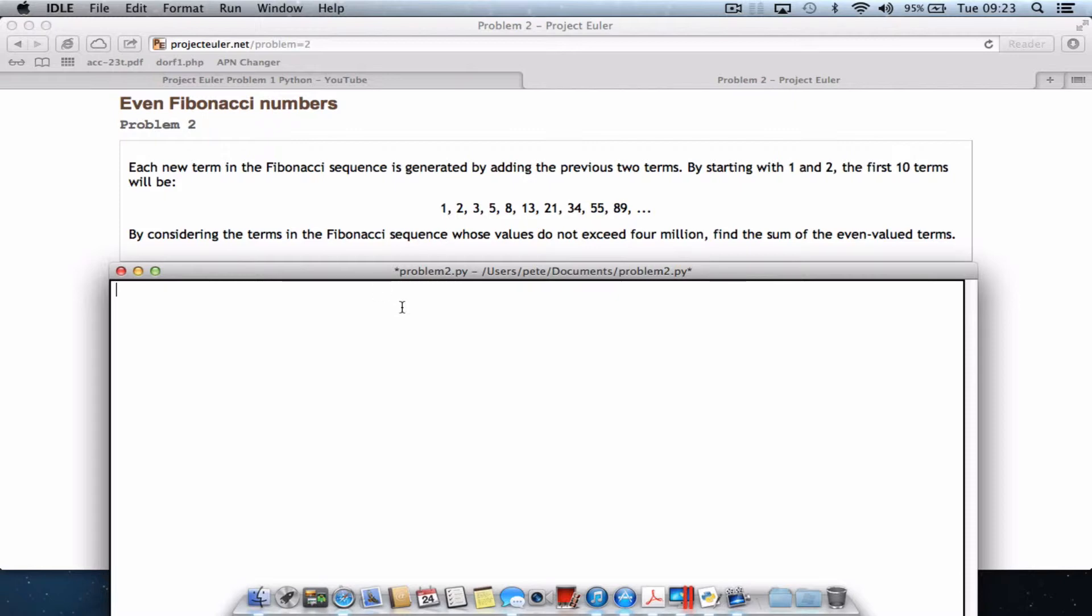What we're going to do is start off by declaring a couple of variables. First we'll have A and that will equal 0, B equals 1, and solution equals 0. So we've got our three placeholders. The A and the B will hold the values and the solution will hold a running total of the sum of the even numbers.